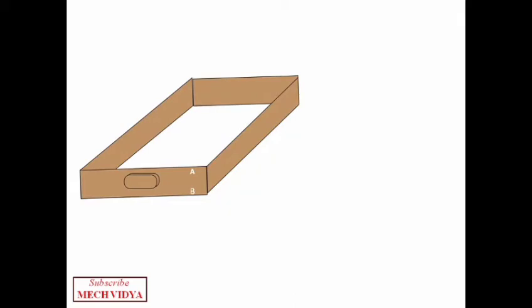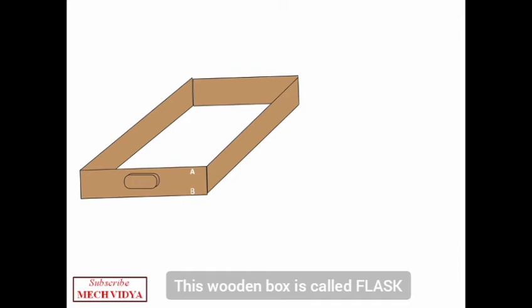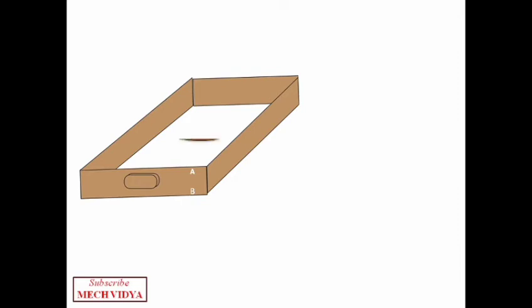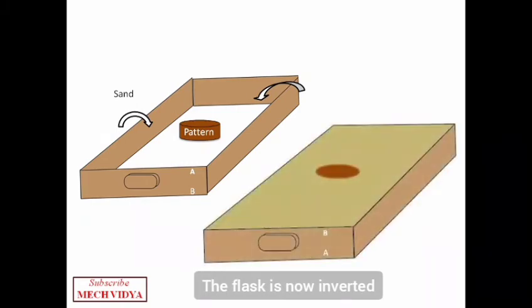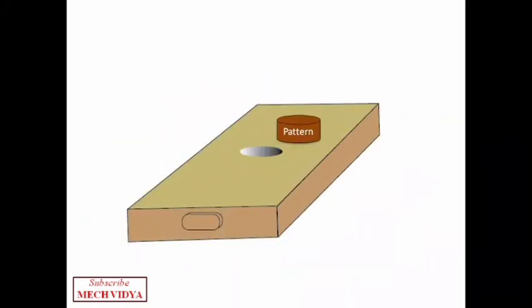Okay, so first I will take a wooden box, also known as the flask, and keep the pattern of the desired shape inside it. And then I will start pouring sand. Now after some time when the sand has been tightly compacted, I will invert the box and pull the pattern out like this. Now this gives us the cavity. When the pattern is pulled out, a small cavity will be obtained.